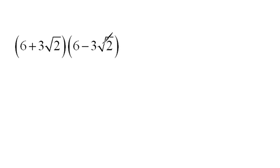In this problem here, we are multiplying two binomials, so we are going to have to distribute. So I'm going to distribute my 6 first. 6 times 6 would be 36. 6 times the negative 3 square roots of 2 would be negative 18 square roots of 2.